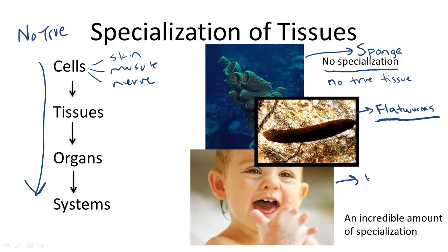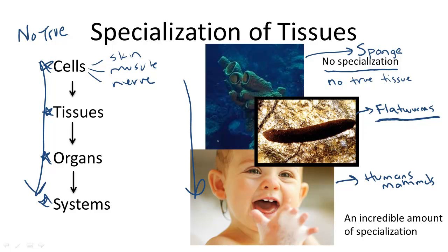Humans and mammals got luckier — they exhibit all forms of specialization, every single one seen here on the left. Mammals have cells, tissues, complex organs, and complex systems. The more complex the organism is in terms of its anatomy, the more likely it is to be further along the evolutionary chain.